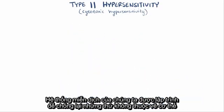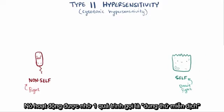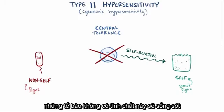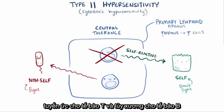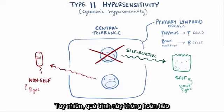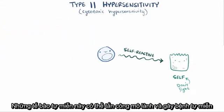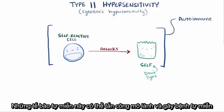The immune system is set up to fight anything that's considered non-self. This works in large part because of a process called central tolerance, which is when developing immune cells that are self-reactive get destroyed or inactivated, whereas immune cells that aren't are allowed to survive. This happens while they're still in their primary lymphoid organs — the thymus for T cells and bone marrow for B cells. This process isn't perfect, and some self-reactive B and T cells will escape and attack healthy tissue, resulting in an autoimmune disease.